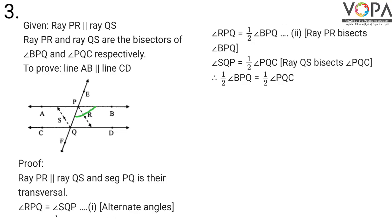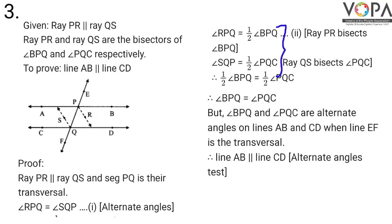Angle SQP is equal to half of angle PQC because ray QS bisects angle PQC. Number both these as statement 2. From statements 1 and 2, half of angle BPQ equals half of angle PQC. Cancelling the halves from both sides, angle BPQ is equal to angle PQC.